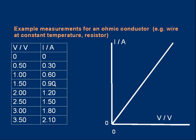This table tells us, for example, that when a voltage of 1.5 volts is applied, the current through the resistor is 0.9 amps. We can turn this table into a graph. The convention is the current goes on the y-axis and the voltage on the x-axis. The result is called a characteristic curve or IV curve. For an ohmic conductor it's a simple straight line through the origin, which tells us that I is proportional to V — that's a way of stating Ohm's law.